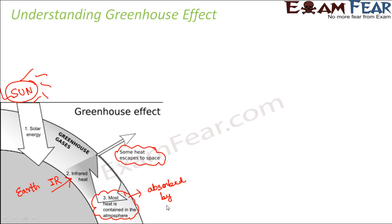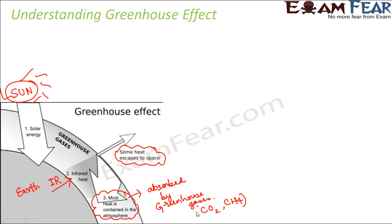Most of the infrared radiation is absorbed by gases present in the atmosphere, and these gases are called greenhouse gases. The main greenhouse gases are carbon dioxide and methane. The methane and carbon dioxide present in the atmosphere trap or absorb the infrared radiation, so the infrared radiation remains within the Earth.